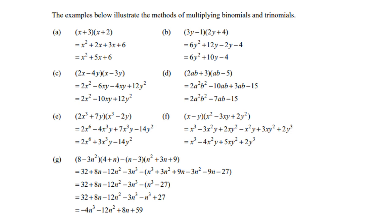So you have X times X, which is X squared, X times 2 is 2X, 3 times X is 3X, and 3 times 2 is 6. Then you collect your like terms. 2X plus 3X is 5X.